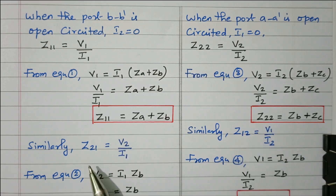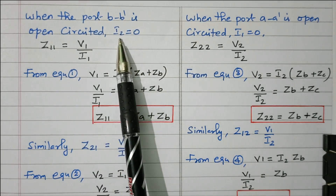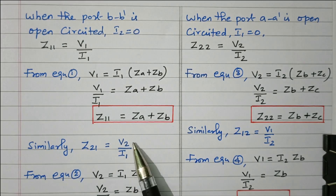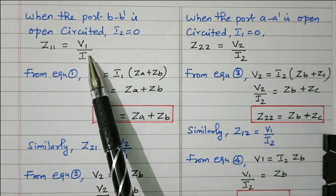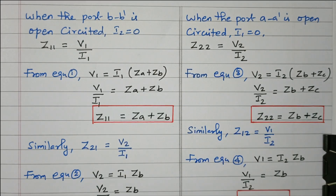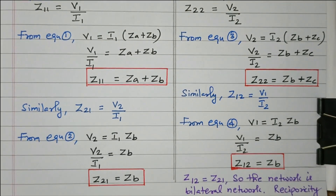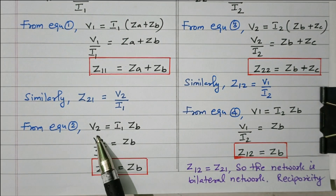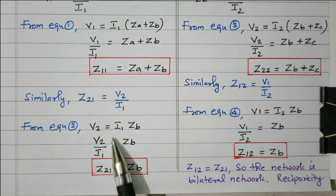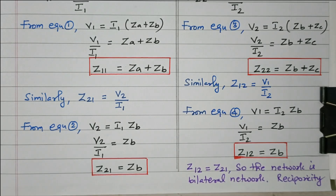Now for Z21: BB dash is open circuited and I2 = 0, so Z21 = V2 / I1, which is output voltage divided by input current — the open circuit forward transfer impedance. Transfer means output divided by input. From equation 2, V2 = I1 × ZB, so V2/I1 = ZB. Therefore Z21 = ZB.